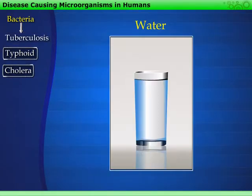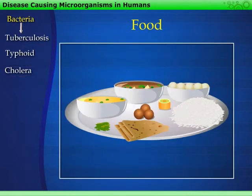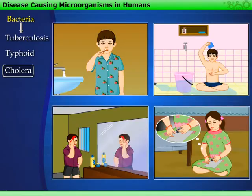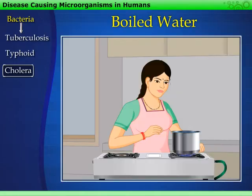The mode of transmission of typhoid and cholera is water. Note that cholera spreads through food also. Such diseases can be prevented by maintaining personal hygiene and good sanitary habits. It is also essential to consume properly cooked food and boiled drinking water.